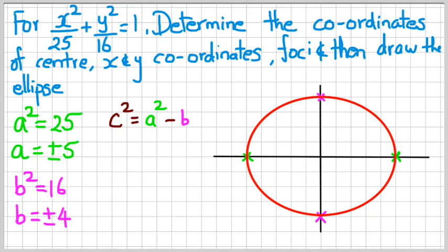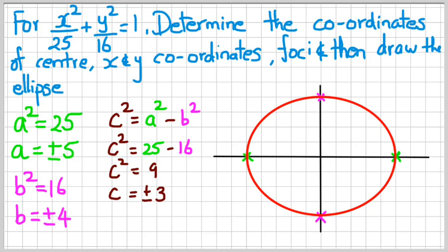So we have 25 take away 16, which is 9, which means c is equal to plus or minus 3. There's the positive foci at (3, 0) and then there's the foci at (−3, 0).